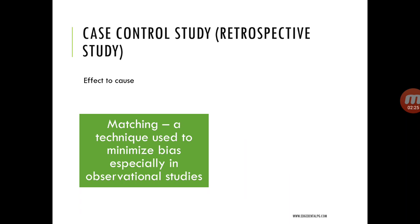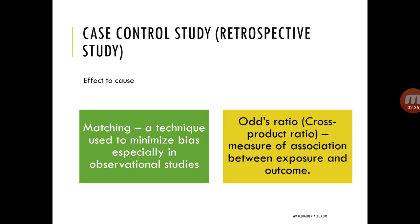The important terminologies under the case control study are: matching — a technique used to minimize bias, especially in observational studies — and the odds ratio, which is a cross product ratio and a measure of association between exposure and outcome. The case control study can only be used to assess the prevalence of the disease, and hence we can only calculate the odds ratio in this study design.